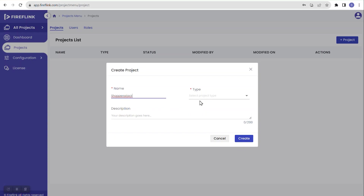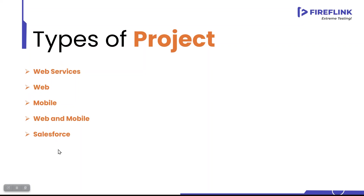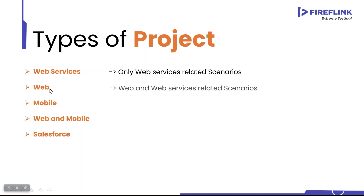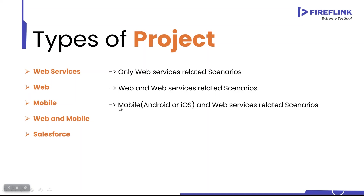Next it asks for the project type. The dropdown gives options: Web Services, Web, Mobile, Web and Mobile, and Salesforce. The type determines what can be automated. Selecting 'Web Services' means only API/web services scenarios can be automated. Selecting 'Web' allows automating web applications as well as web services. Selecting 'Mobile' allows automating Android or iOS applications plus web services.